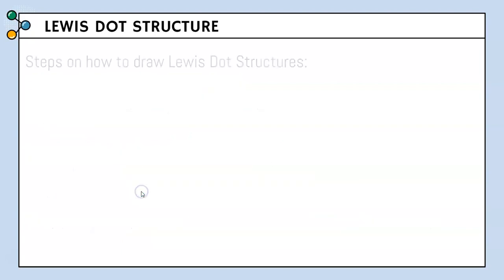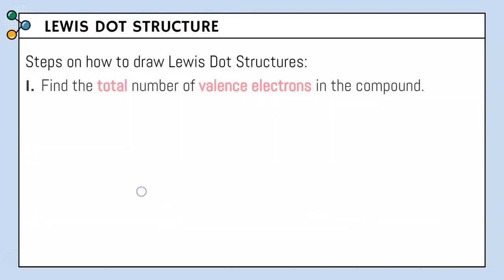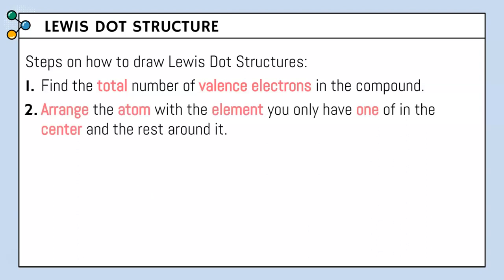Here are the steps of drawing Lewis Dot structures. Step number one, we're going to find the total number of valence electrons each compound has. Step number two, we're going to arrange the atom with the element you only have one of in the center and the rest around it.